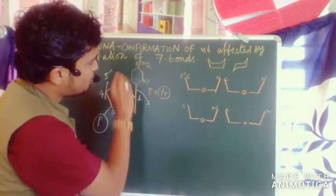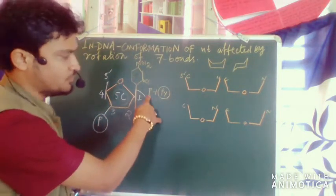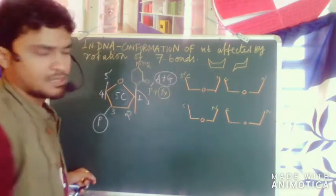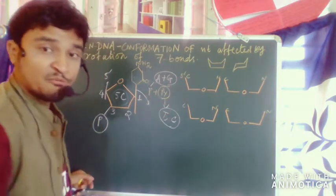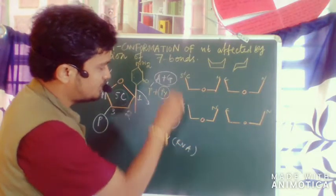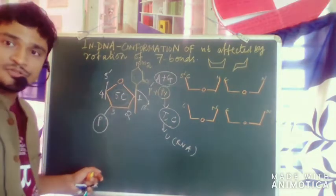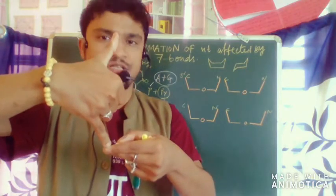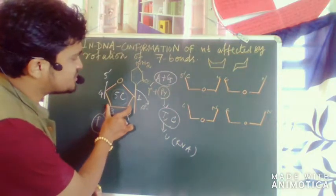The bond connecting the pentose sugar with any nitrogen base — either a purine or pyrimidine — is a beta glycosidic link. Purines comprise adenine and guanine; pyrimidines comprise thymine and cytosine, where in RNA thymine is replaced by uracil. It is called a beta glycosidic link because it is above the plane. If it is above the plane we call it beta configuration; if it is below the plane we call it alpha configuration.